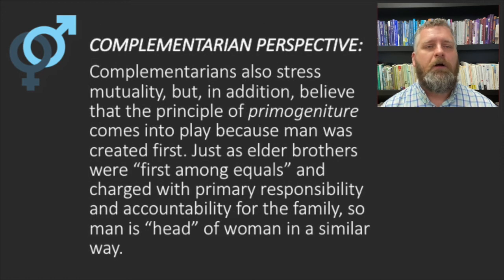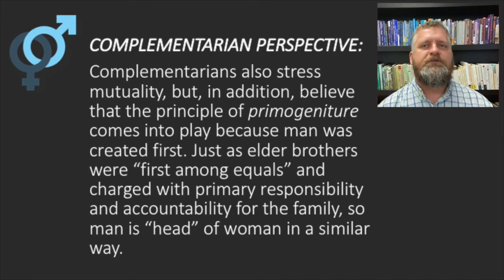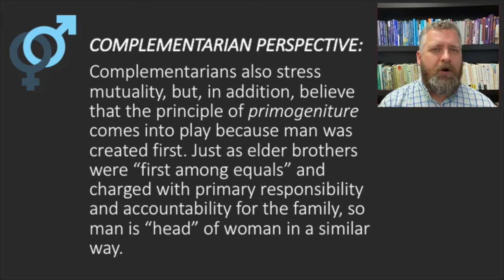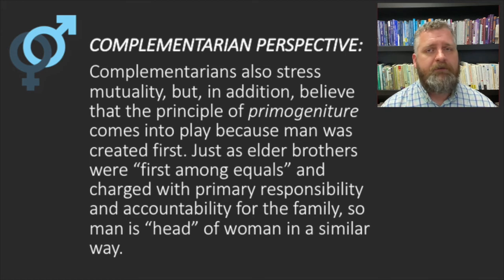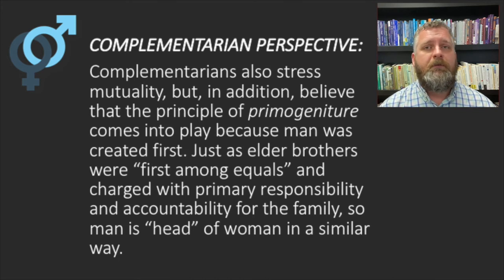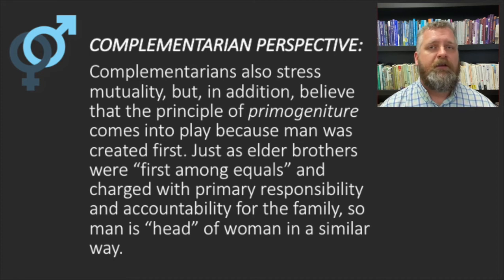A complementarian would respond that they also stress mutuality, but in addition they believe the principle of primogeniture comes into play because man was created first. If God had wanted them to be perfectly identically equal from the outset, he could have made them both at the same time. But in making one before the other, he seems to be making a statement. Ancient and modern cultures understand the oldest to be first among equals — the firstborn has legal rights and primary responsibility. So the man made first is accordingly the head of the woman, with an implicit hierarchy because one is made before the other.